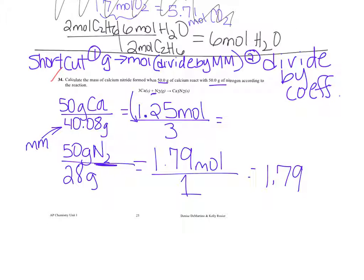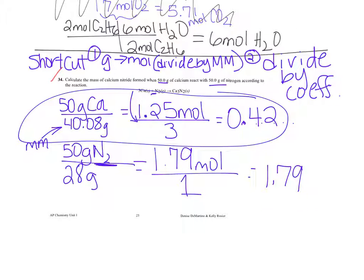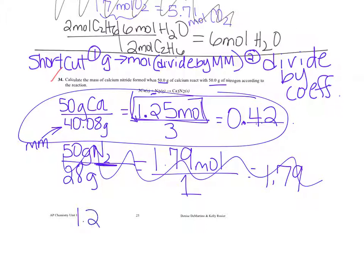Looking at these two ratios, calcium has the smallest value — about 0.42 — so calcium runs out first. Calcium is the limiting reactant; you don't care about nitrogen anymore. That's how you use the shortcut — it takes less time and you don't have to think as hard. From here, you use those 1.25 moles of calcium to figure out the grams of calcium nitride.